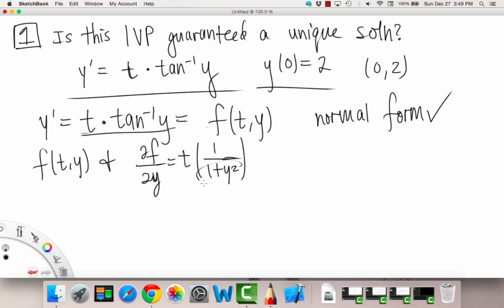This also, because the bottom cannot be 0, because we have 1 plus a non-negative number. It could be 0, and even so, the bottom would still be 1. So this thing, both of these are continuous. We could say they're both continuous.